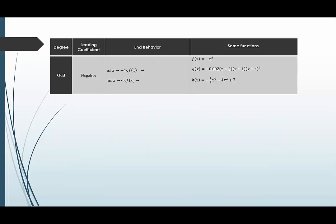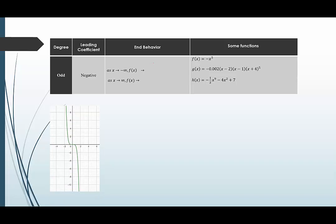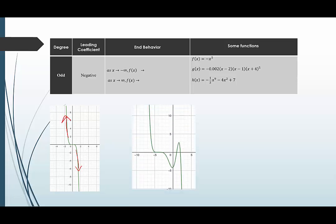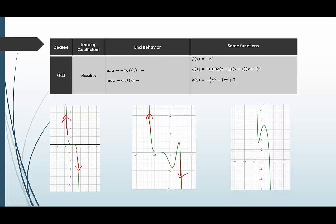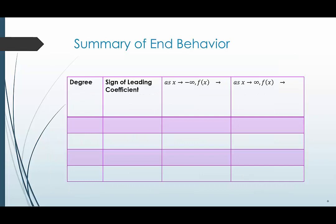Our last case: odd degree with a negative leading coefficient. The negative flips those graphs over a horizontal line. As x is getting smaller and smaller, the graph goes up towards positive infinity. As x is getting bigger, f of x is getting smaller and smaller. We see that in the second graph too — bigger as x gets smaller, going down as x gets bigger. Our last example also goes up and then down. So as x approaches negative infinity, f of x approaches infinity; and as x approaches infinity, f of x approaches negative infinity.